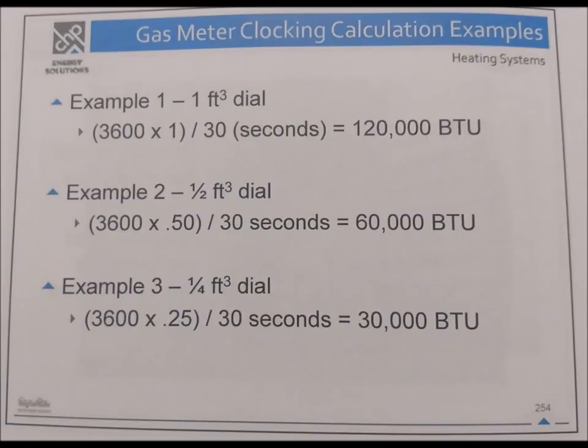Gas meter clocking calculation examples. Example 1: One cubic foot dial — 36,000 times 1 divided by 30 seconds equals 120,000 BTU/hr. Example 2: Half cubic foot dial — 3,600 times 0.50 divided by 30 seconds equals 60,000 BTU/hr. Example 3: One-quarter cubic foot dial — 36,000 times 0.25 divided by 30 seconds equals 30,000 BTU/hr.